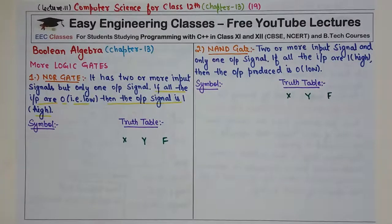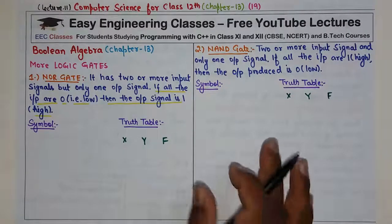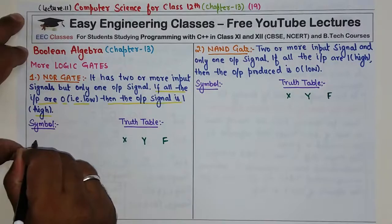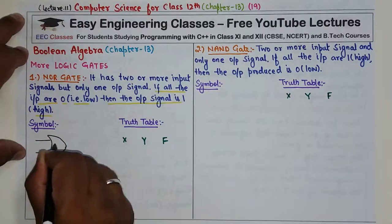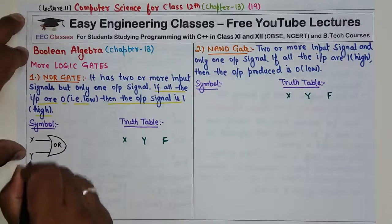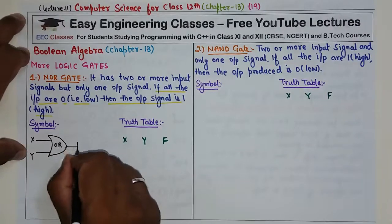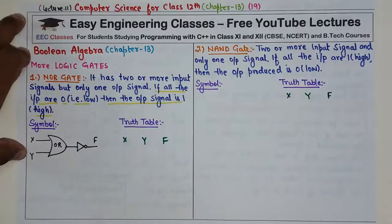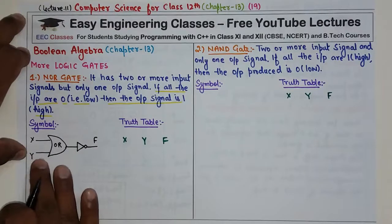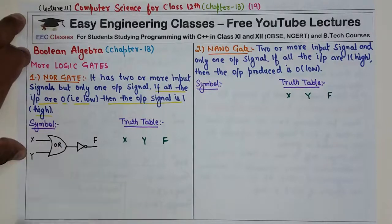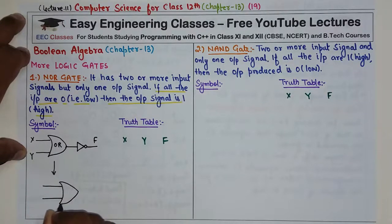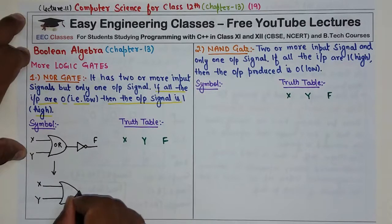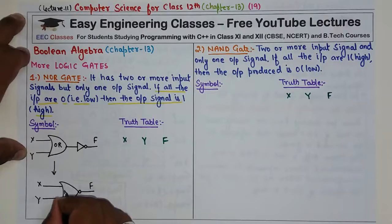Ab dekhte hain NOR gate ka symbol kaisa hota hai. Pehle ek OR gate banate hain — yeh OR gate hai, for example input hai x aur y. Agar iski output ko NOT gate se pass kar dein toh final output aayega — yahi NOR gate hai. Combined symbol mein OR gate ke aage ek small circle bana dein, toh woh NOR gate ban jaata hai.